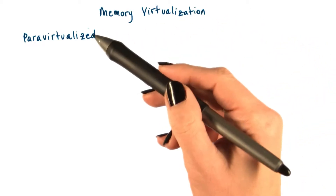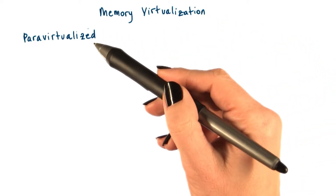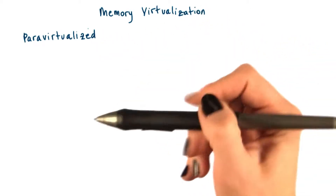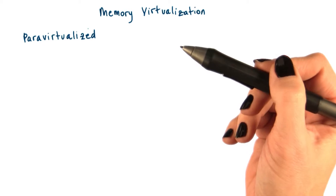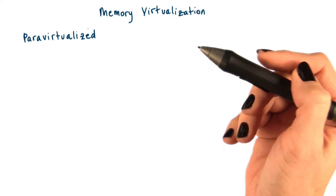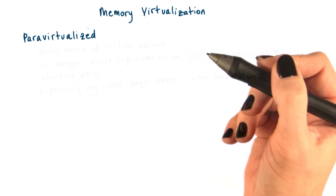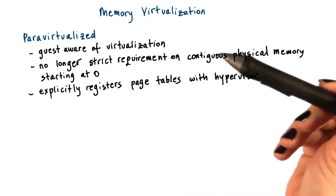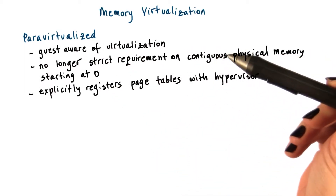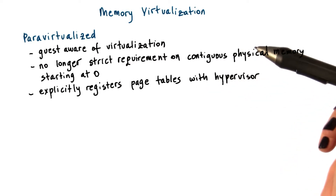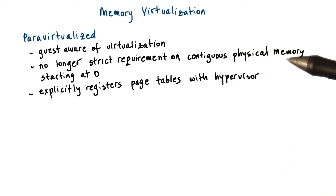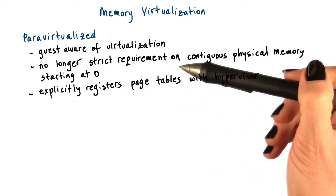In contrast, in para-virtualized systems, the operating system knows that it's executing in a virtualized environment. Because of this, there's no longer a strict requirement for the guest OS to use contiguous physical memory that starts at zero.